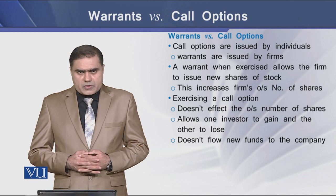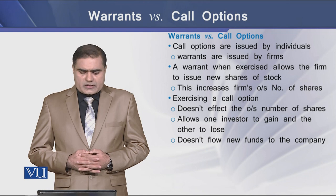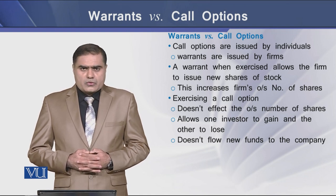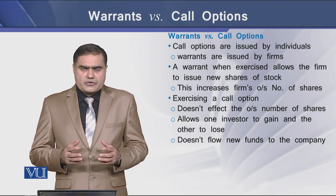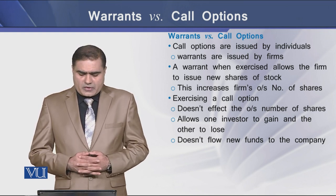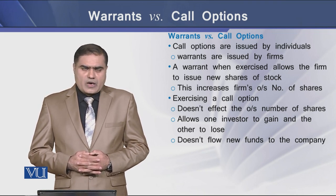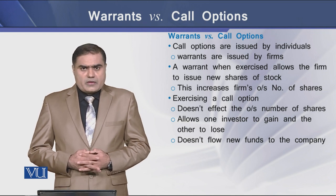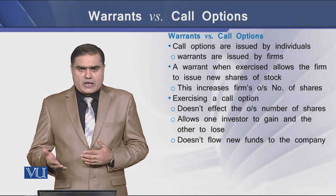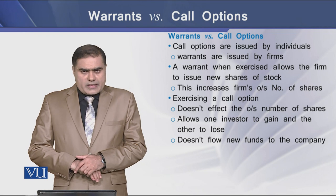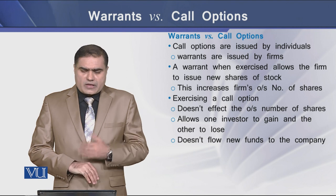The difference between warrants and call options is as follows. Call options are issued by individuals whereas warrants are generally issued by corporations. When a warrant is exercised, the firm issues new shares of common stock, increasing the number of outstanding shares, whereas exercising a call option does not affect the outstanding number of shares. Exercising a call option allows one investor to gain while another loses, and no funds flow to the firm.